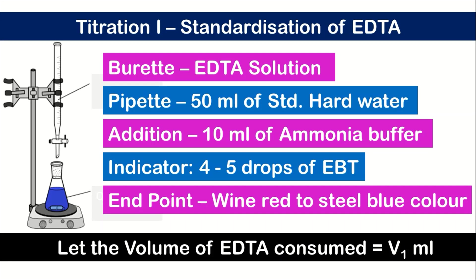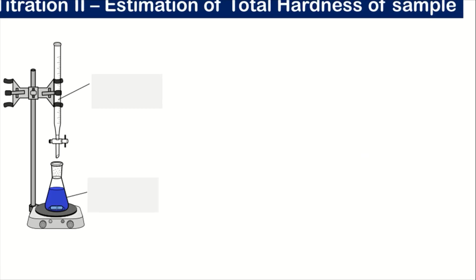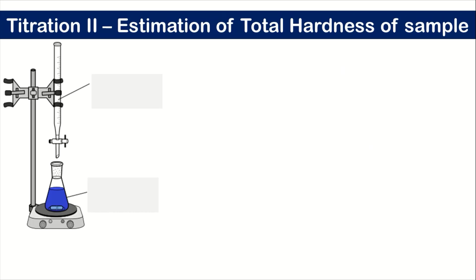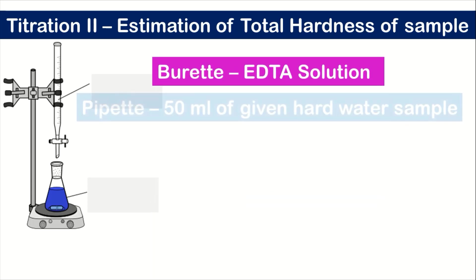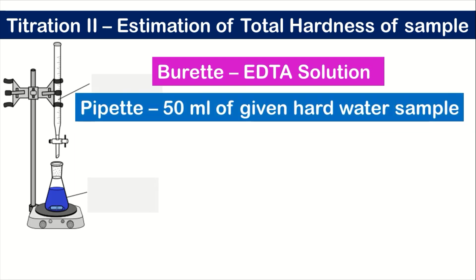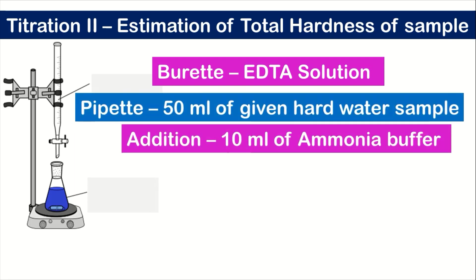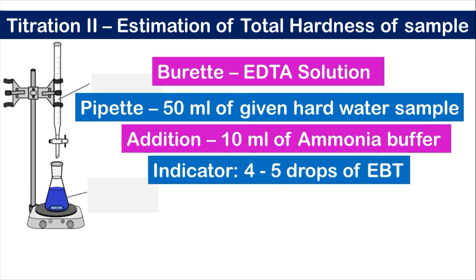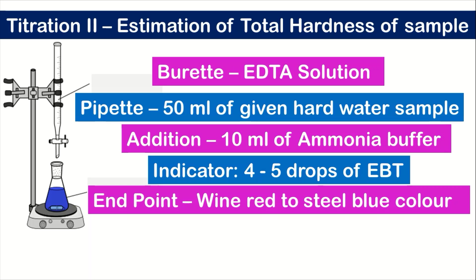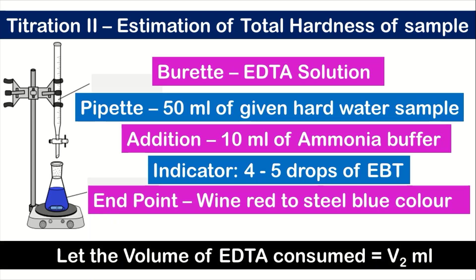Titration two is the estimation of total hardness of the sample. We take EDTA solution in the burette and 50 ml of the given hard water sample in the pipette, add 10 ml of ammonia buffer and four to five drops of EBT indicator. The endpoint is the gorgeous wine red to steel blue color change, and the volume of EDTA consumed is considered V2 ml.